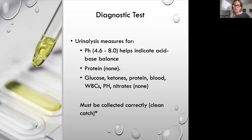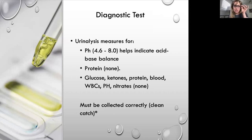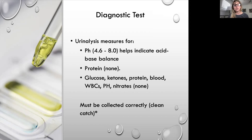For urinalysis, the sample must be collected correctly — refer to your specific healthcare facility's protocol. Typically, if the patient is voiding, you want a clean catch specimen. Give them a cleansing towelette, have them cleanse front to back, urinate in the toilet for a couple of seconds, then collect midstream urine. If you don't get a clean catch and use the first void, results will often be contaminated and inaccurate.